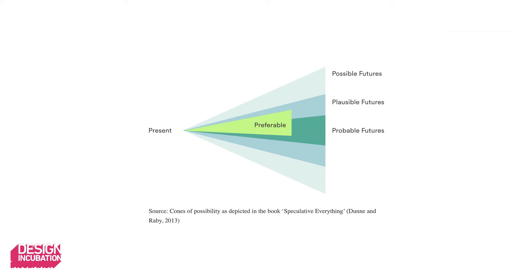When we think about the future, we don't like to think of it as a straight line. We like to think of it as possibilities or alternate futures. We always talk about the futures because there are many possibilities. You can think of it like a cone — everything lies within the cone of possibilities, and the things that lie outside the cone are fantasy.